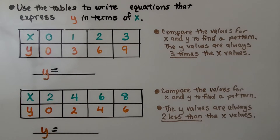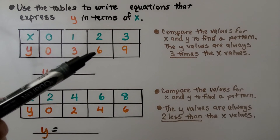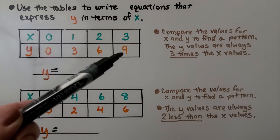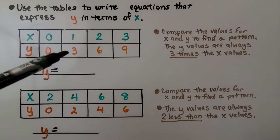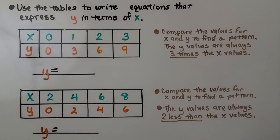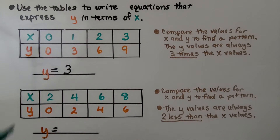We use tables to write equations that express y in terms of x. Looking at the first table: when x is 0, y is 0; when x is 1, y is 3; when x is 2, y is 6; and when x is 3, y is 9. Do you notice a pattern? Comparing the x and y values, y is 3 times greater than x. So y is equal to 3x.